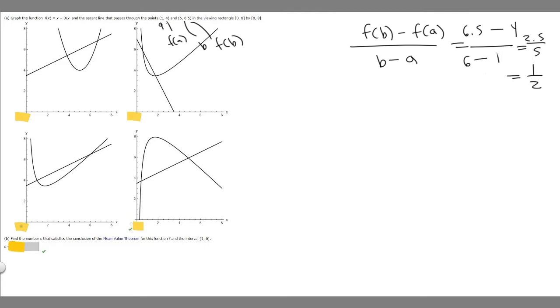Now we've got this value, and basically this is just going to be the slope of our secant line. What we want to do with this is look at our function. We have this function f(x), which equals x plus 3 over x. I'm just going to rewrite it as x plus 3x to the minus 1, because they're the same thing. What we want to do is take the derivative of this function, set it equal to 0.5, solve for x, and then this x value is going to give us c.